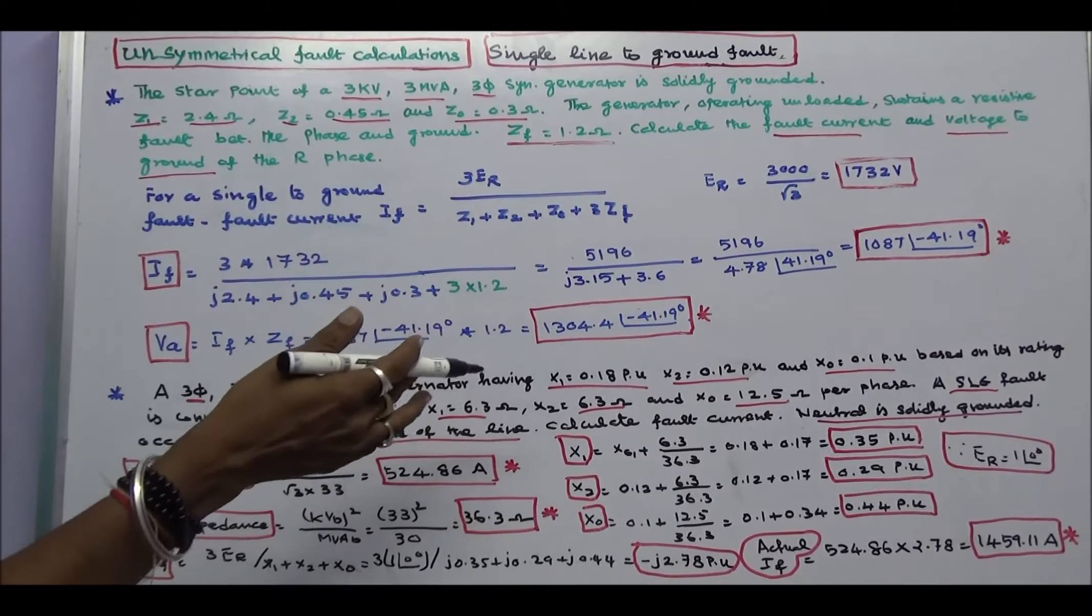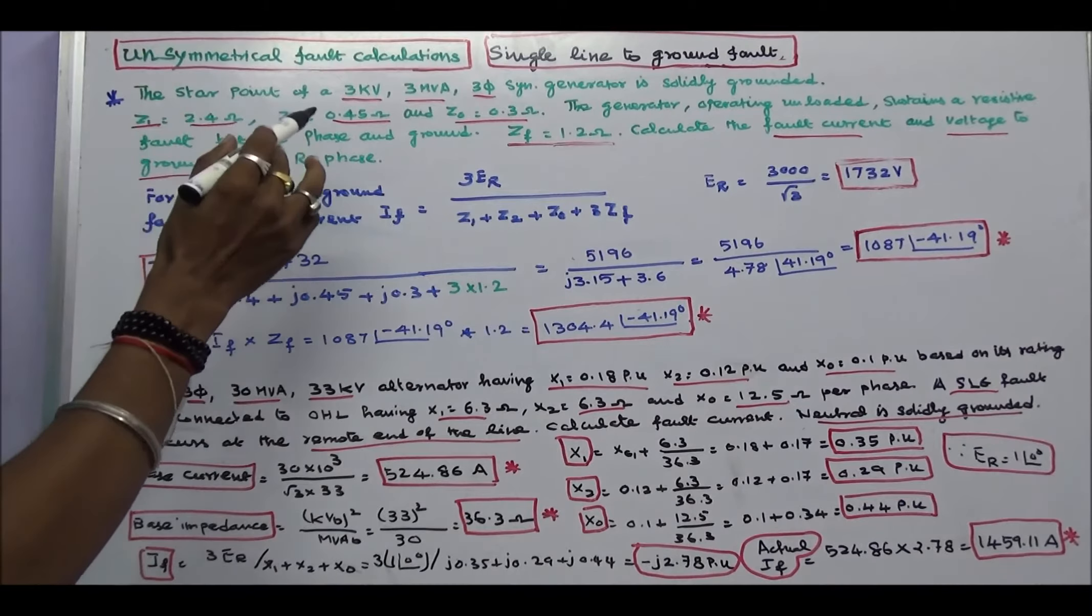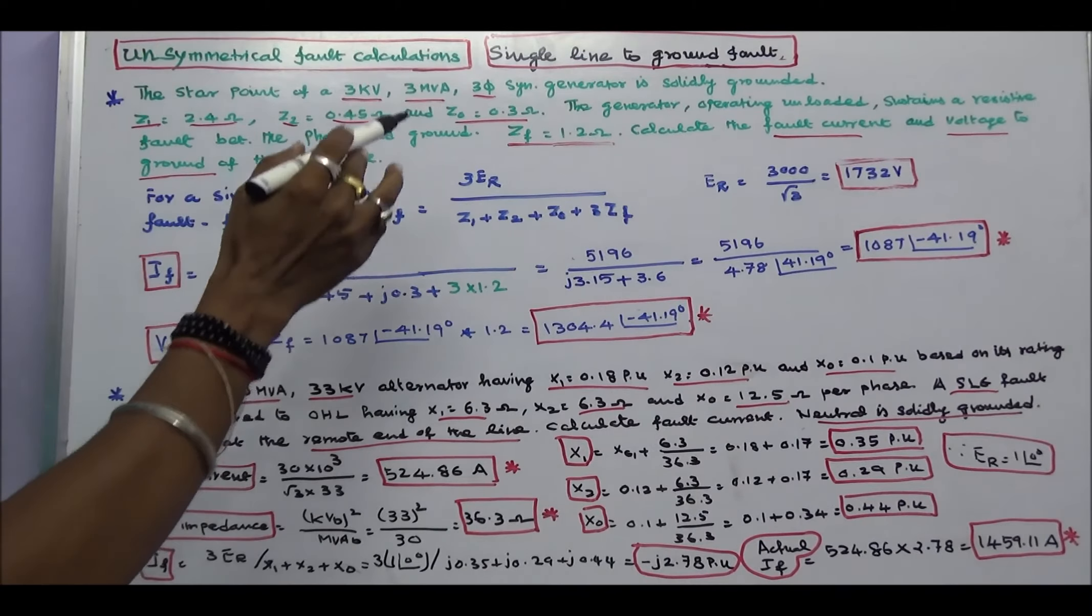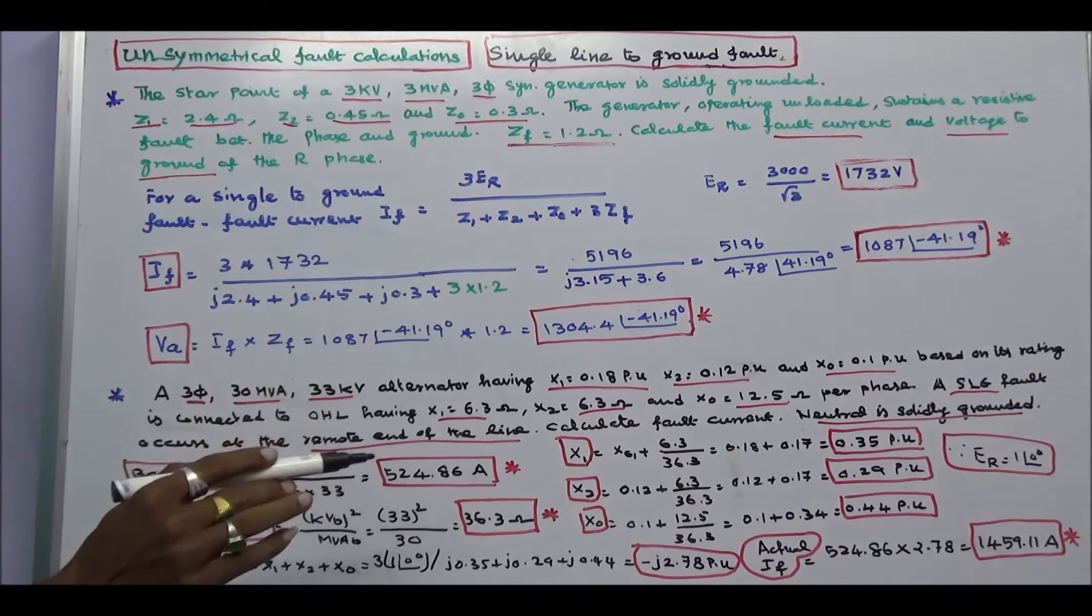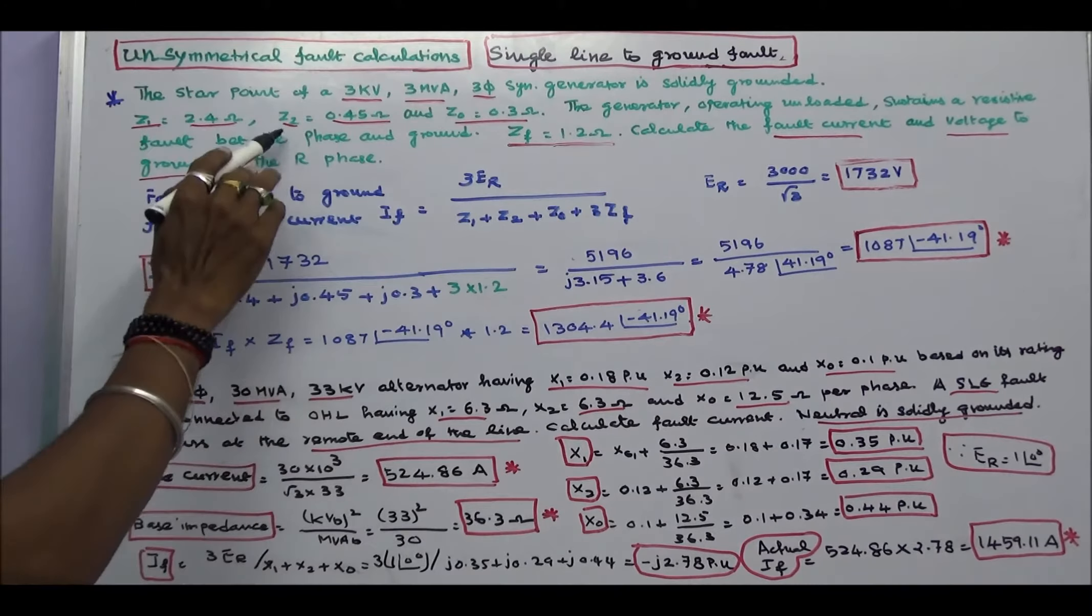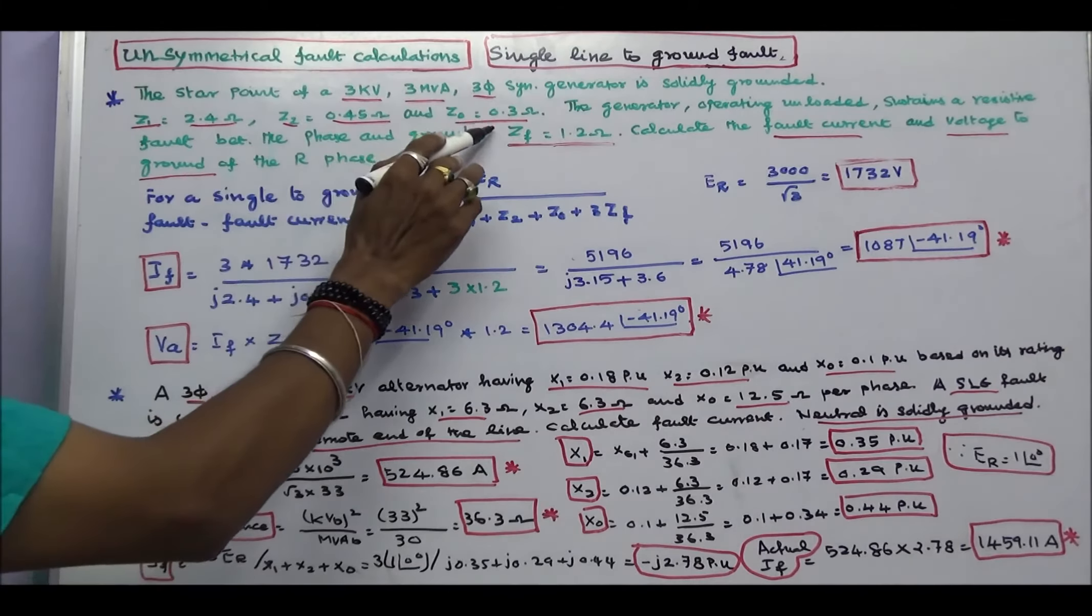This class we work out two problems. First problem is the star point of 3 KV, 3 MEA, 3 phase synchronous generator is solidly grounded. Z1 is equal to 2.4 ohms, Z2 is equal to 0.45 ohms and Z0 is equal to 0.3 ohms.